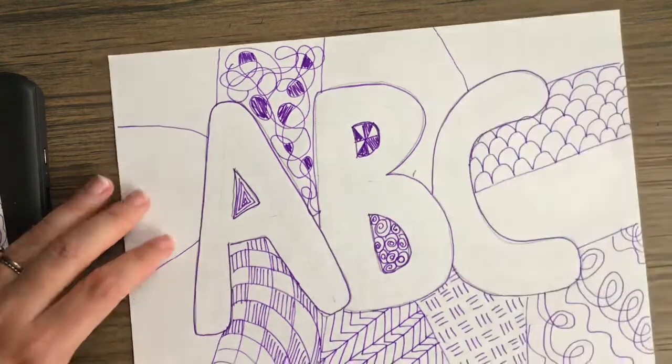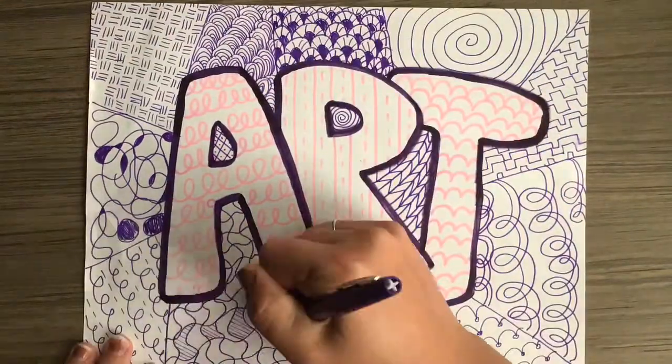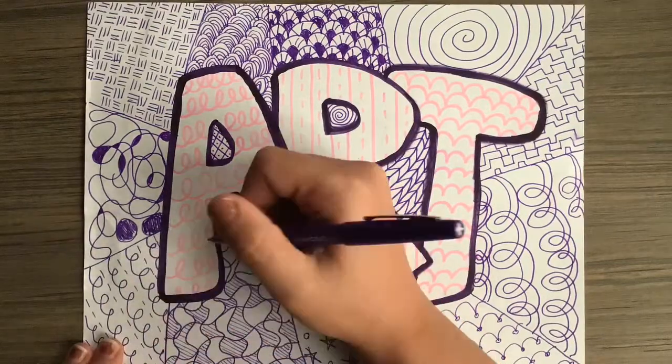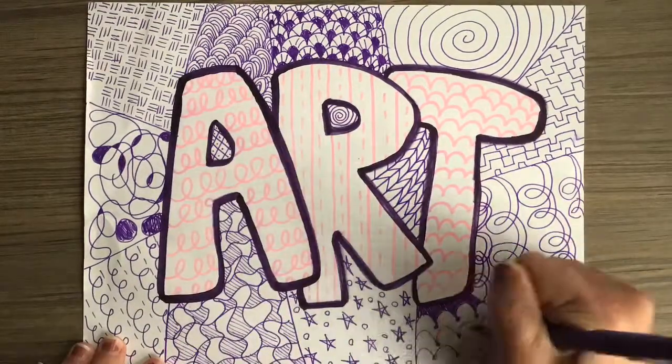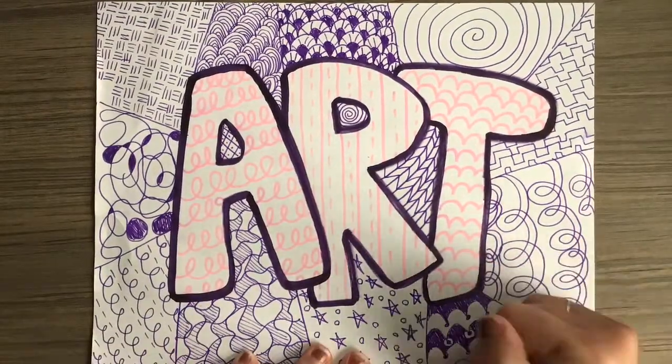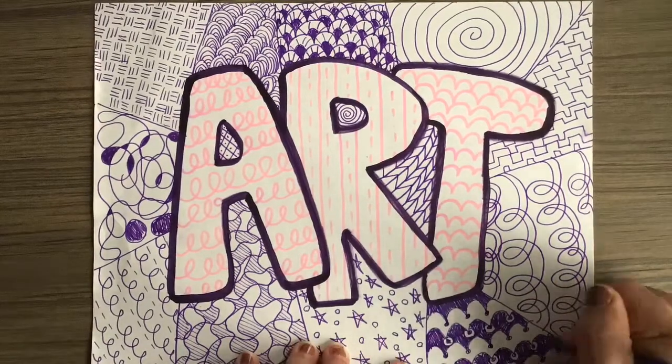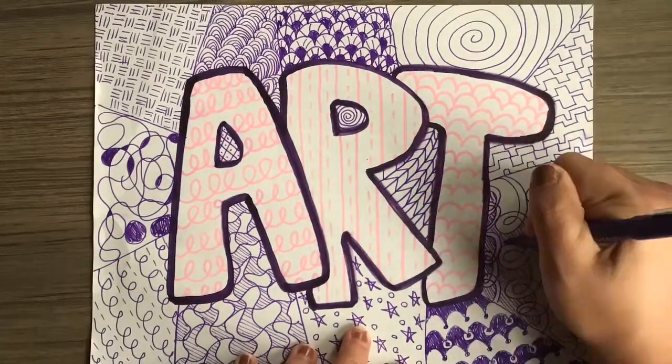You can see an example of how I did that with this Zentangle drawing, with the light pink marker inside the letters. Now you can tell I spent way more time on this drawing. Each section has been filled in, but I'm also going back and making improvements to each section.